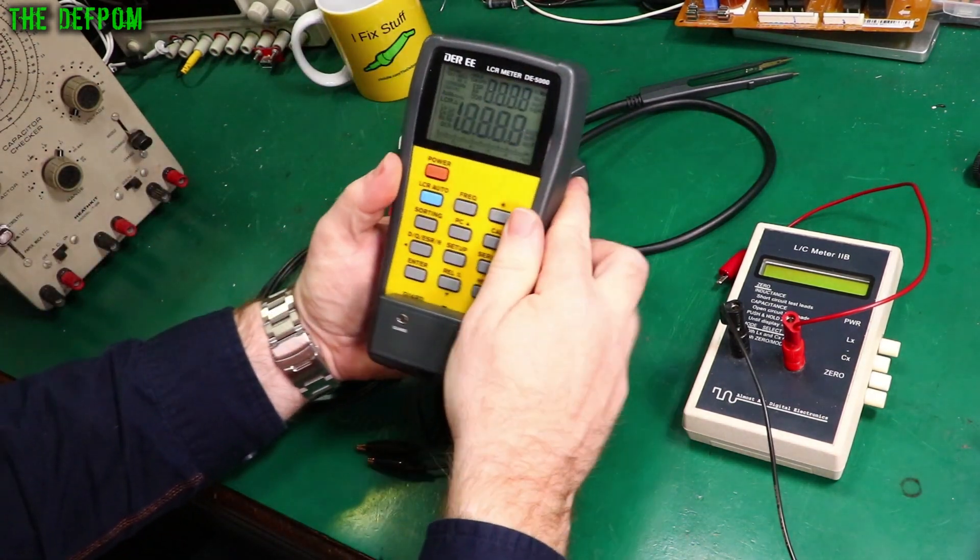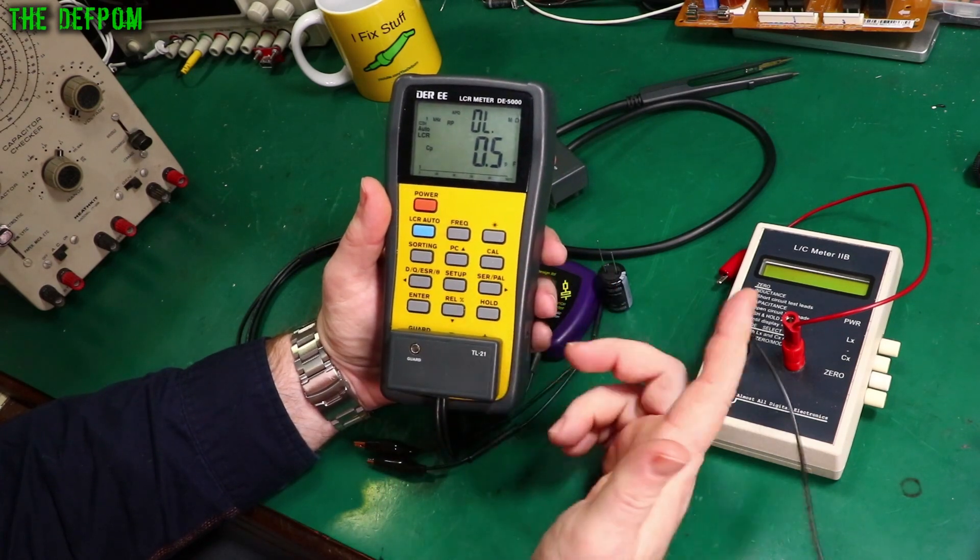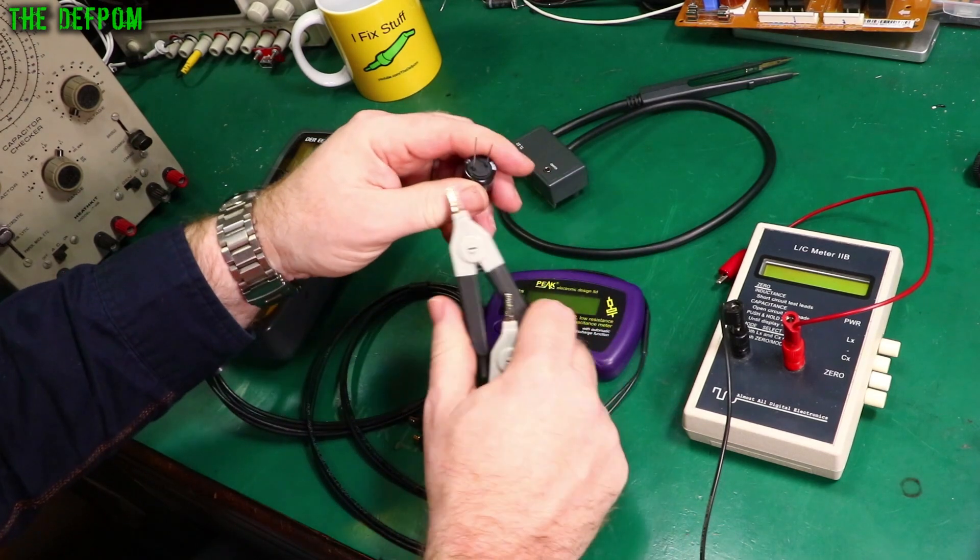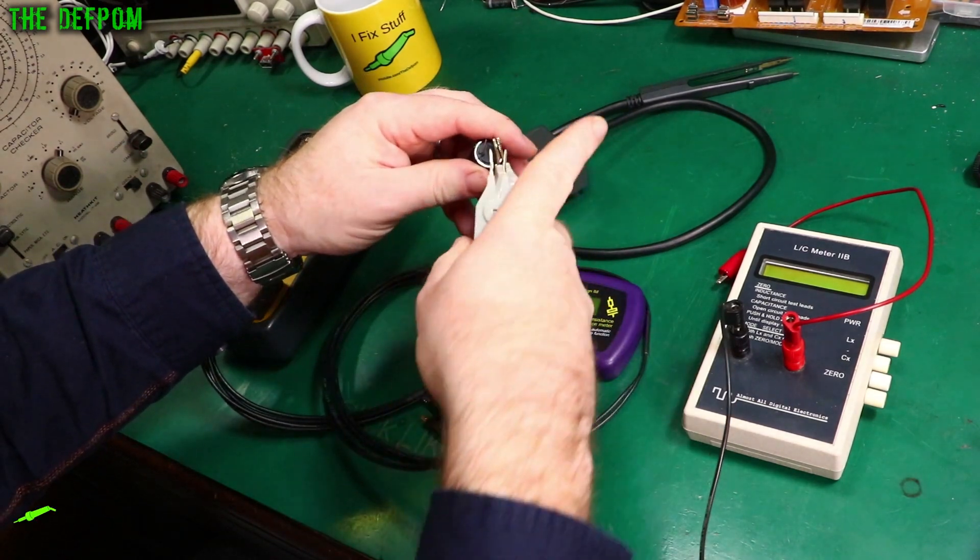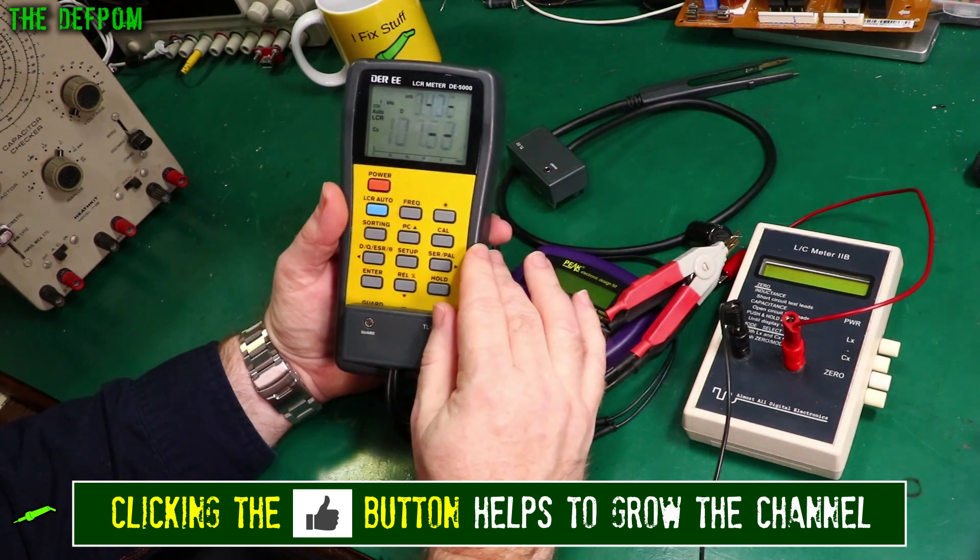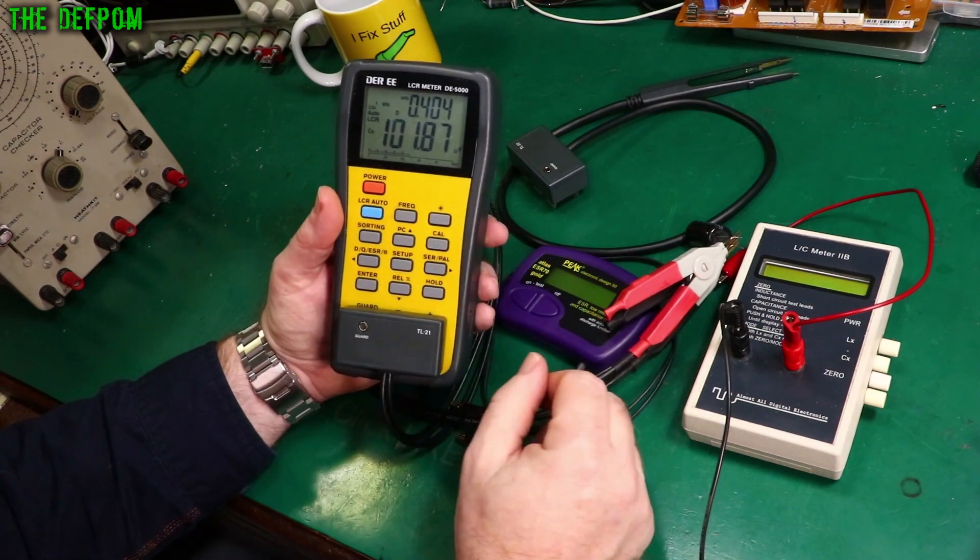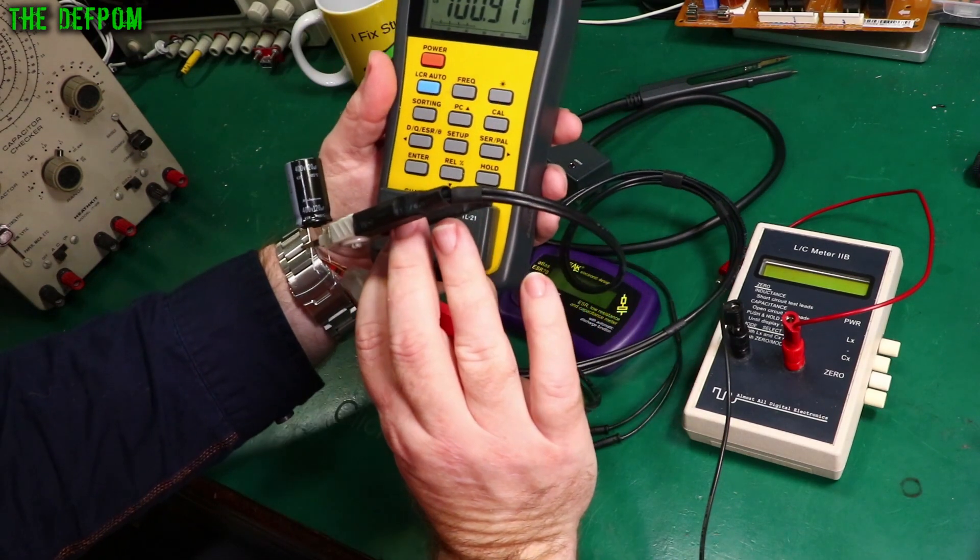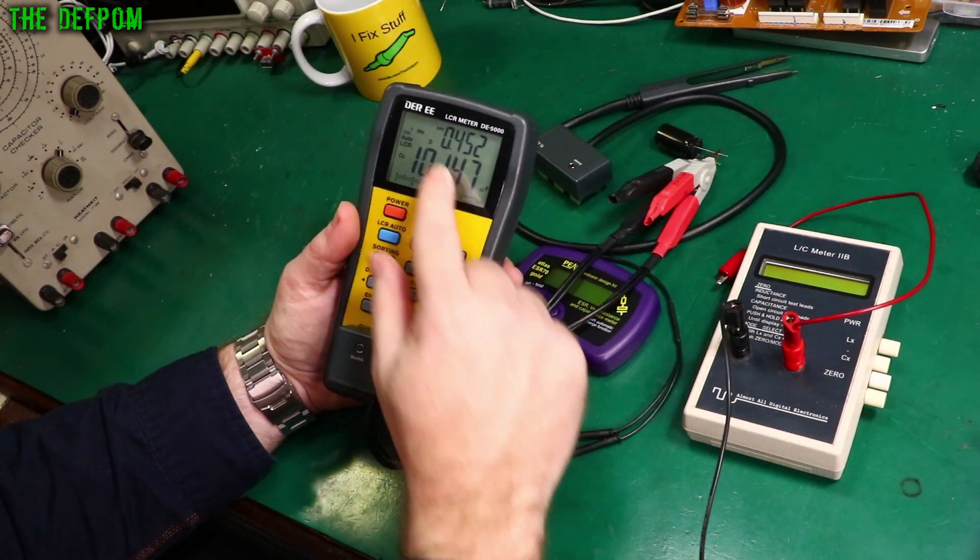Anyway, so I'll turn this one on. This is auto mode so it should basically detect anything it's connected to. So if I clip onto a capacitor. This uses a four wire measurement which means it's got better accuracy and it's detected a capacitor. There we go, 101 microfarad, that's what it's found.